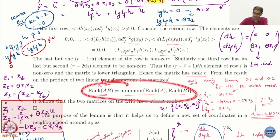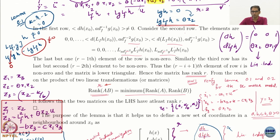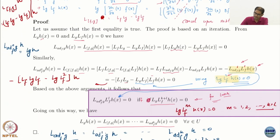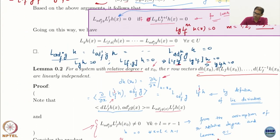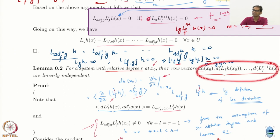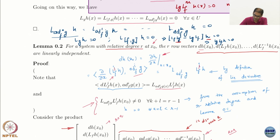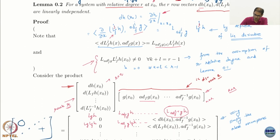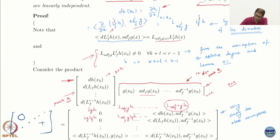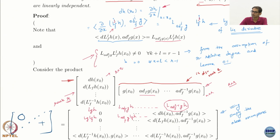We use the fact that rank of a product equals the minimum of the two ranks to prove that these vectors are linearly independent. We construct a matrix out of these row vectors and multiply it by another matrix, then look at the rank of the product. The inner product of D Lf^i h with ad_f^j g turns out to equal L_{ad_f^i g}(Lf^j h).